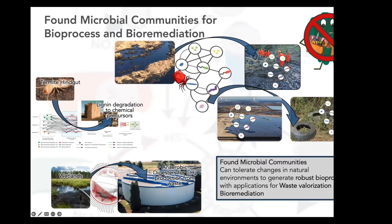In summary, found microbial communities for bioprocess and bioremediation include taking communities from contaminated environments and applying them for bioremediation and biodegradation. The microbes within the termite hindgut, which break down wood and lignin, can produce chemical precursors used in other industries. My work also explores using microbes from wetland sediments to diversify anaerobic digestion feedstocks for methane production. These found communities can tolerate changes in natural environments to generate robust bioprocesses with applications in waste valorization and bioremediation.